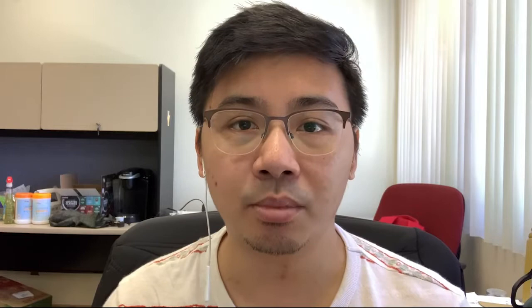Gallium can also be alloyed with other elements such as indium or tin to create what's called a eutectic alloy. This eutectic composition means it can readily shift from its liquid state to a solid state once it reaches its eutectic temperature, which is highly dependent on the overall composition of the alloy. You end up getting the lowest melting point at a very specific compositional ratio between the elements added together.